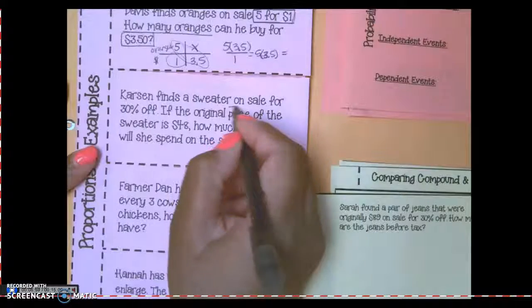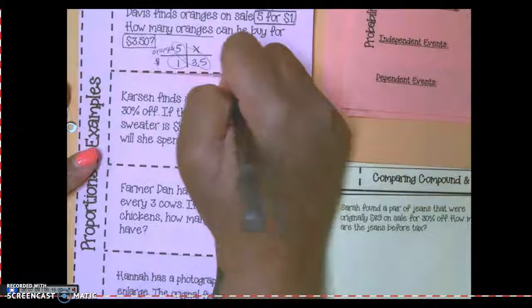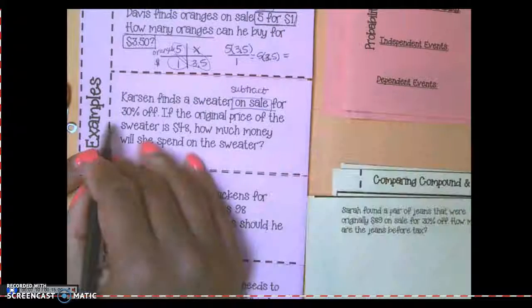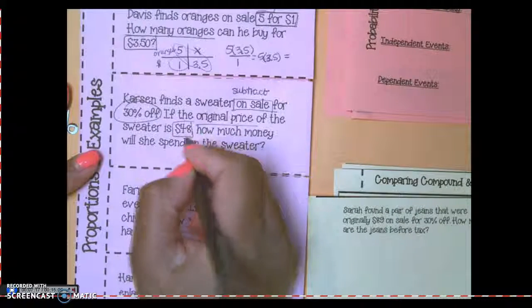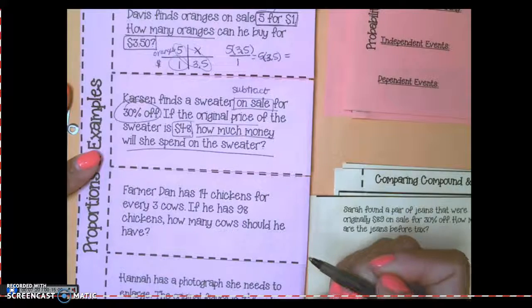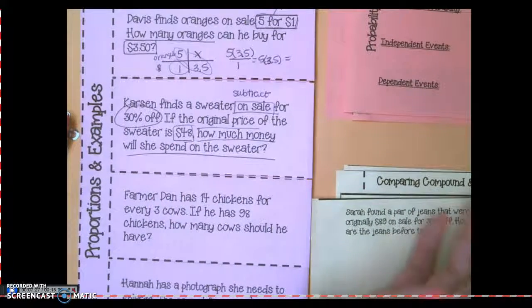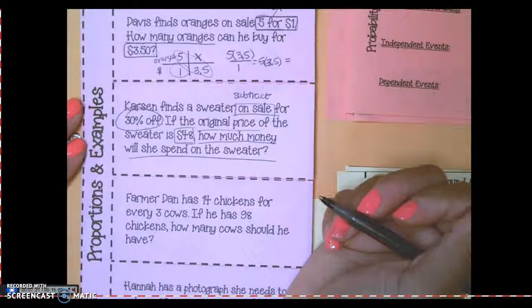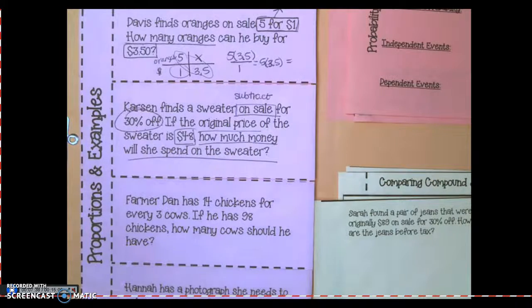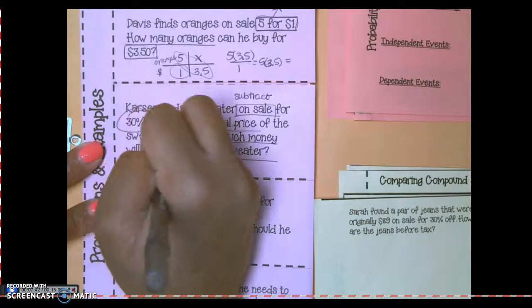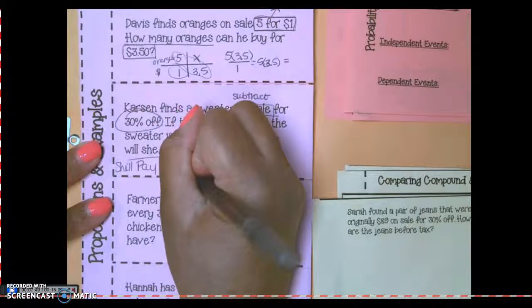Carson finds a sweater on sale. What does on sale mean? What operation am I doing? Subtracting, it's a discount. For 30 percent off, this is my discount. If the original price of the sweater is $48, how much money will she spend on the sweater? Okay, Carson's a girl. And if she's taking 30 percent off, what percent am I paying for full price? 100. If I take 30 off, then it'll be 70 percent she will pay.